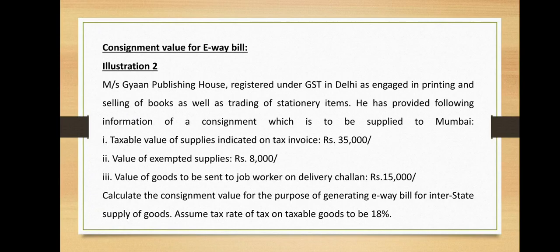Calculate the consignment value for the purpose of generating an e-way bill for interstate supply of goods. Assume the rate of tax on taxable goods is 18%. According to Rule 138(1) of the CGST Rules 2017, an e-way bill is mandatorily required to be generated if goods are moved in relation to supply and the consignment value exceeds rupees 50,000. The explanation stipulates that the consignment value shall be the value determined in accordance with Section 15, declared in an invoice, bill of supply, or delivery challan, and shall include CGST, SGST, UTGST, and IGST and cess, if any, and shall exclude the value of exempted supply of goods where the invoice is issued in respect of both exempt and taxable supply of goods.